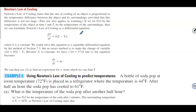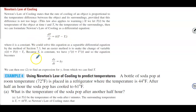This law also applies to warming. If we let T(t) be the temperature of the object at time t, and T_s be the temperature of the surroundings, then we can formulate Newton's law of cooling as a differential equation: dT/dt = K(T − T_s), where K is a constant.